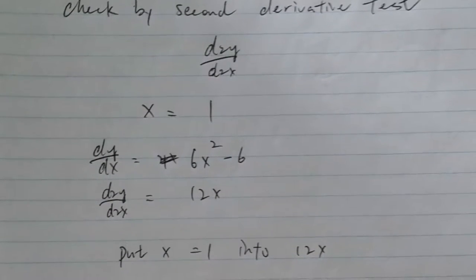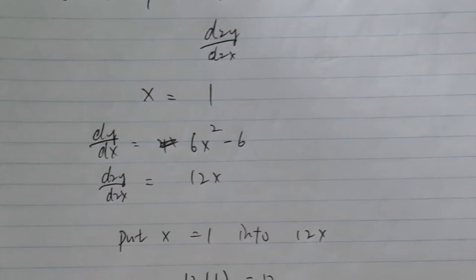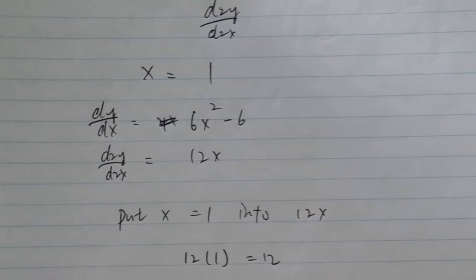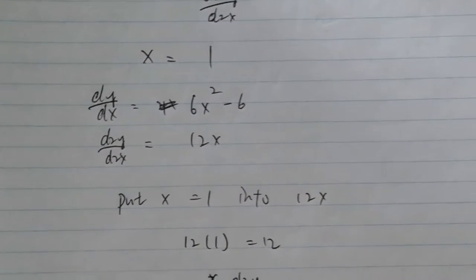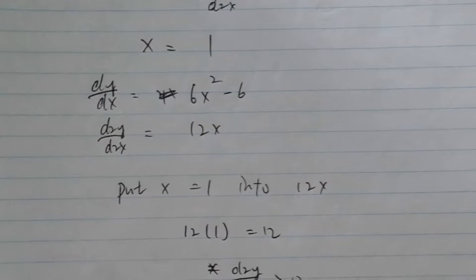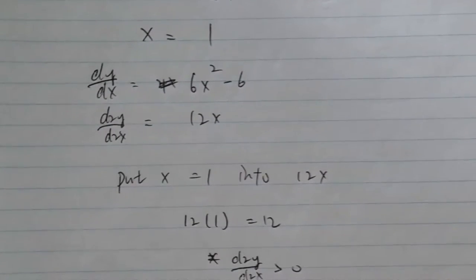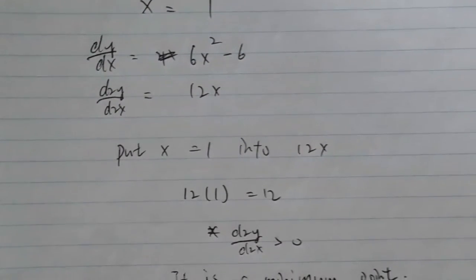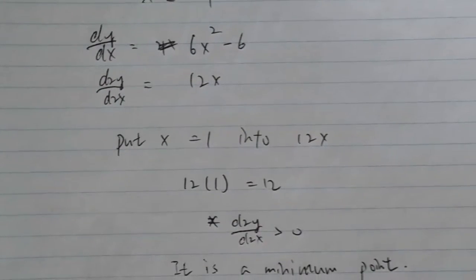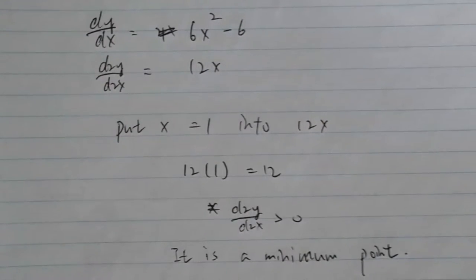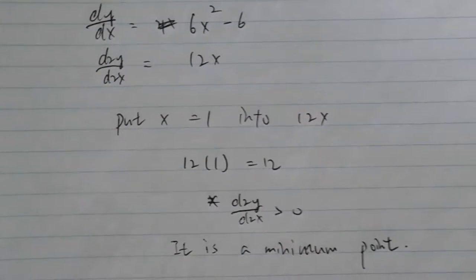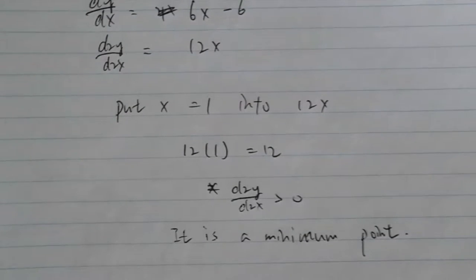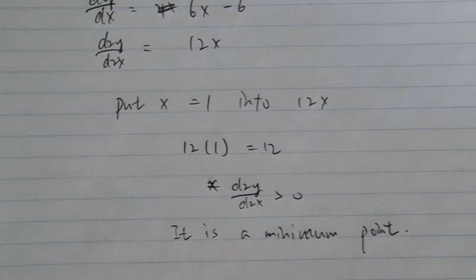I used second derivative test and did the formula twice. After I did the formula twice, the result is 12x. I put x equals to 1. 12 times 1 equals to 12. d2y divided by t2x equals to 12. And it is greater than 0. We can find out that it is a minimum point by using secondary reflective test.